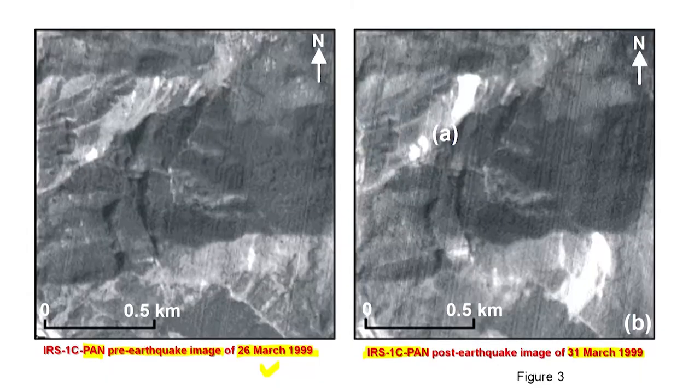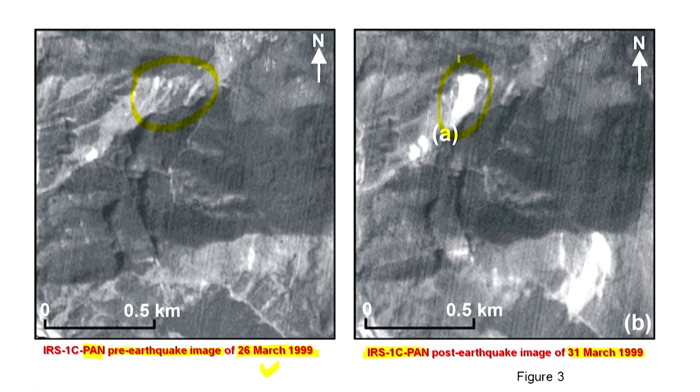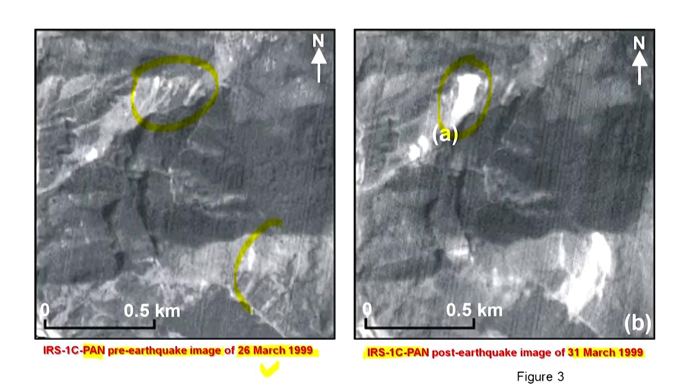So whatever changes we see between these two images with a 5-day time reference must be induced by that earthquake event of 29th March. As you can see, in this area there were already some signs of slope failure that nobody noticed, but when the earthquake occurred, a big landslide appeared. After checking the meteorological data and other inputs, we can attribute this landslide to the earthquake. Another area also shows a large landslide induced by the Chamoli earthquake.